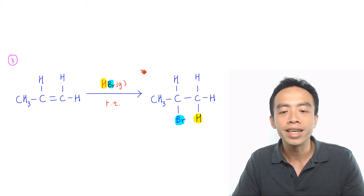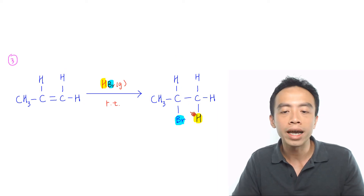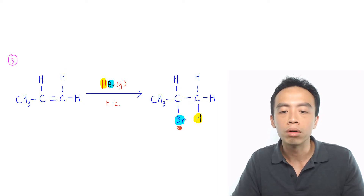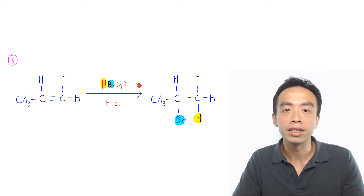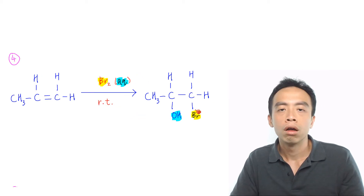The third must-know reaction is electrophilic addition to form bromoalkane. The reagents and conditions will be HBr in a gaseous state at room temperature.